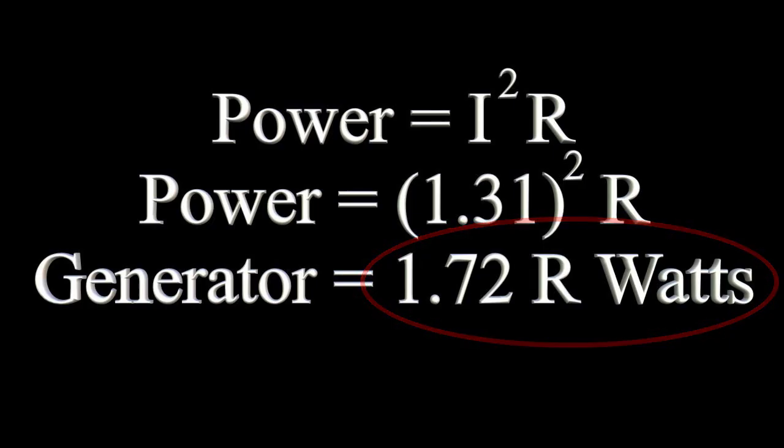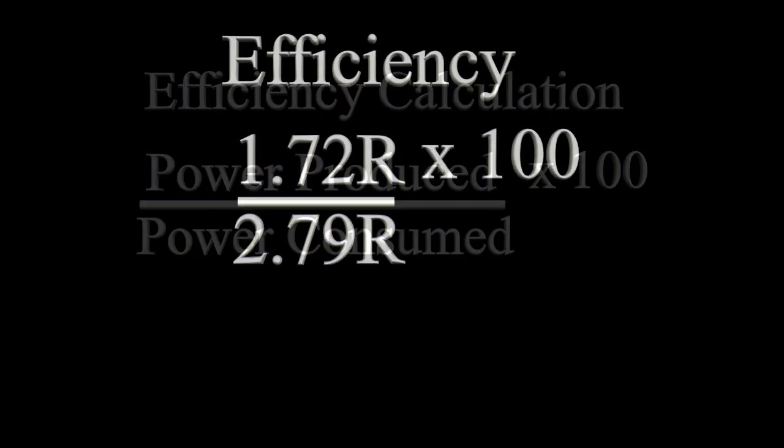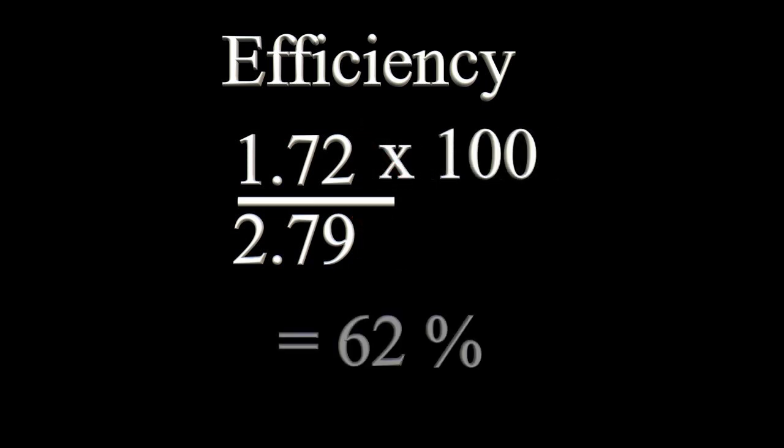We can calculate the percent efficiency of this system by dividing power produced by power consumed times 100. I am assuming resistance R is the same on both sides. R drops out of the equation, producing this result. 62% efficient.